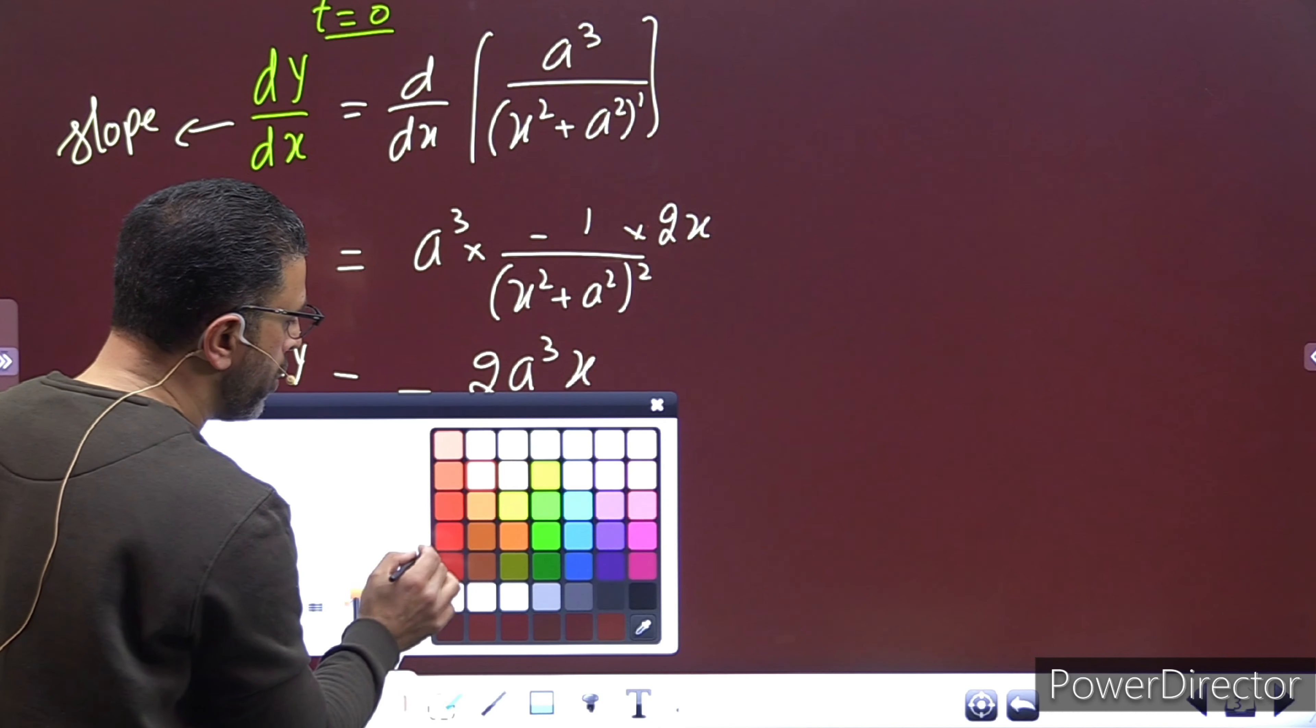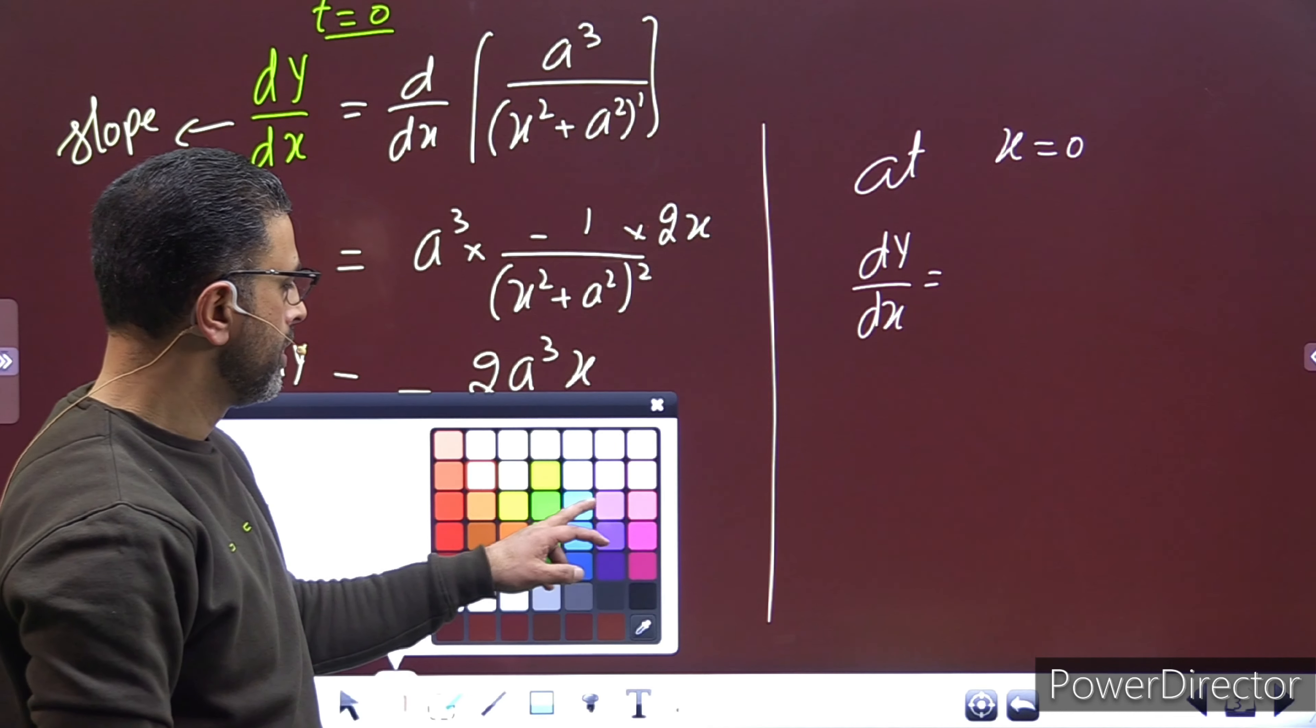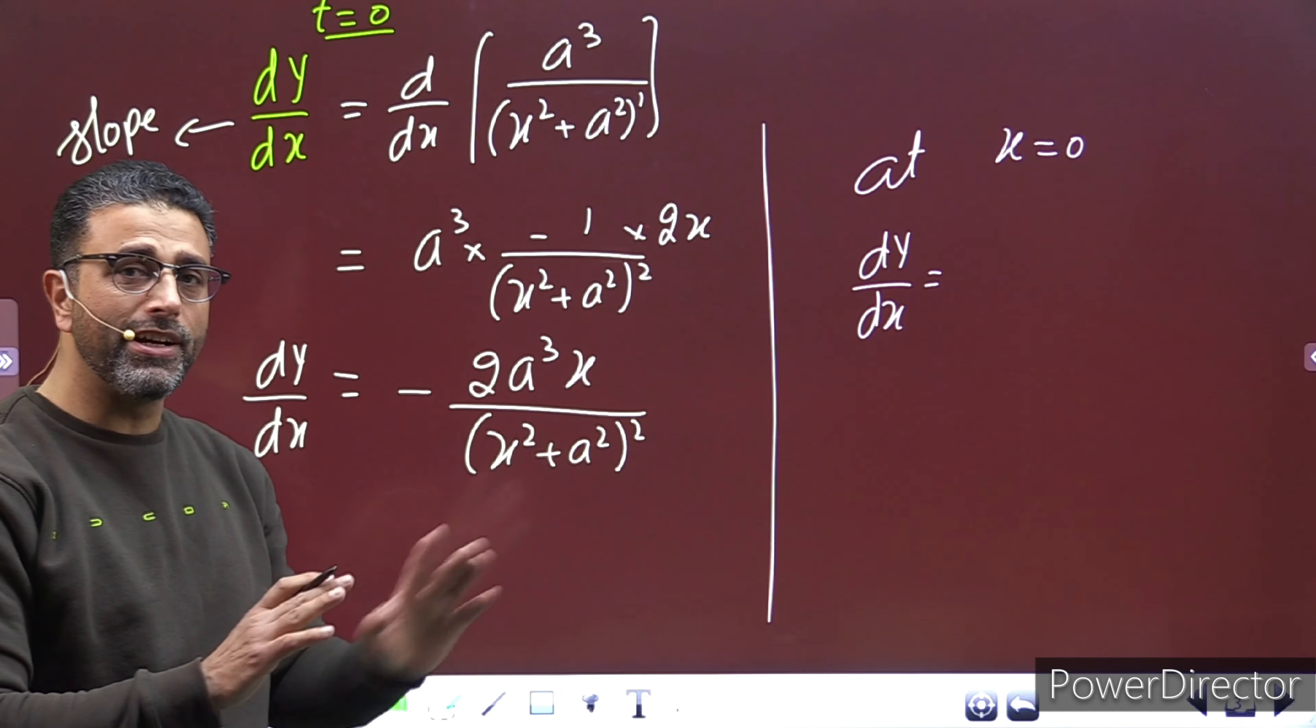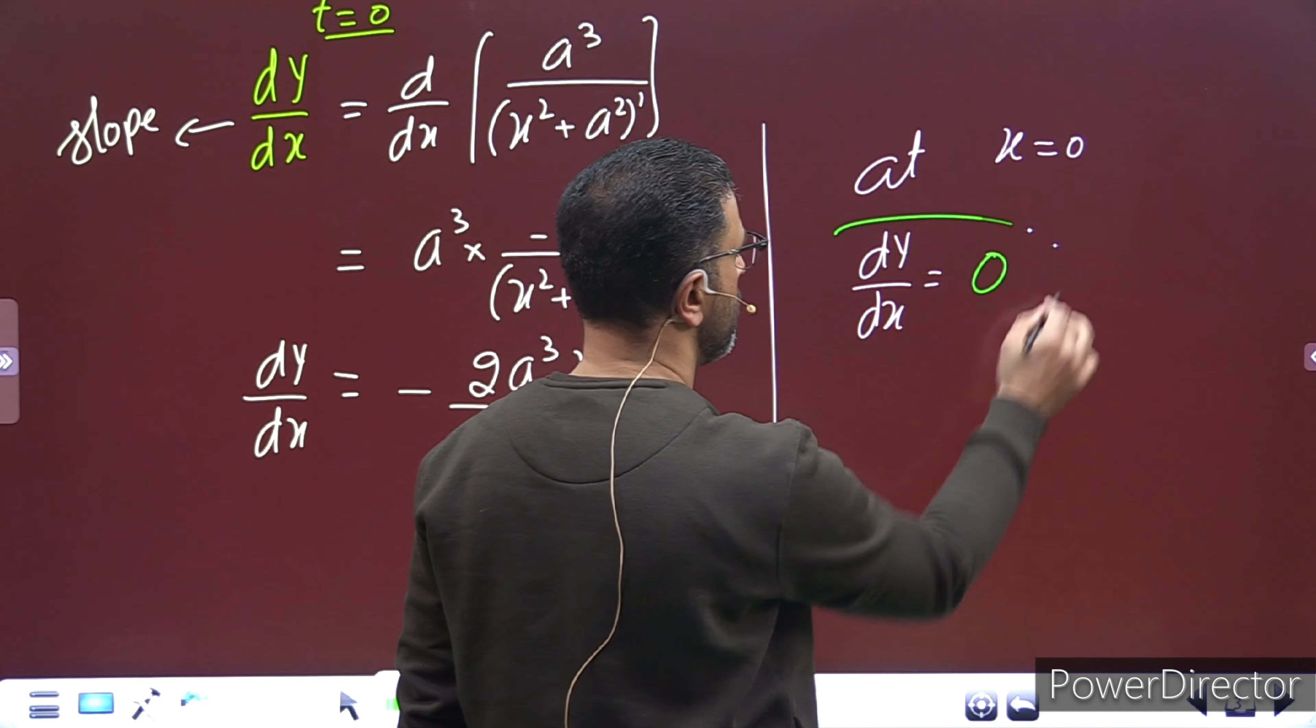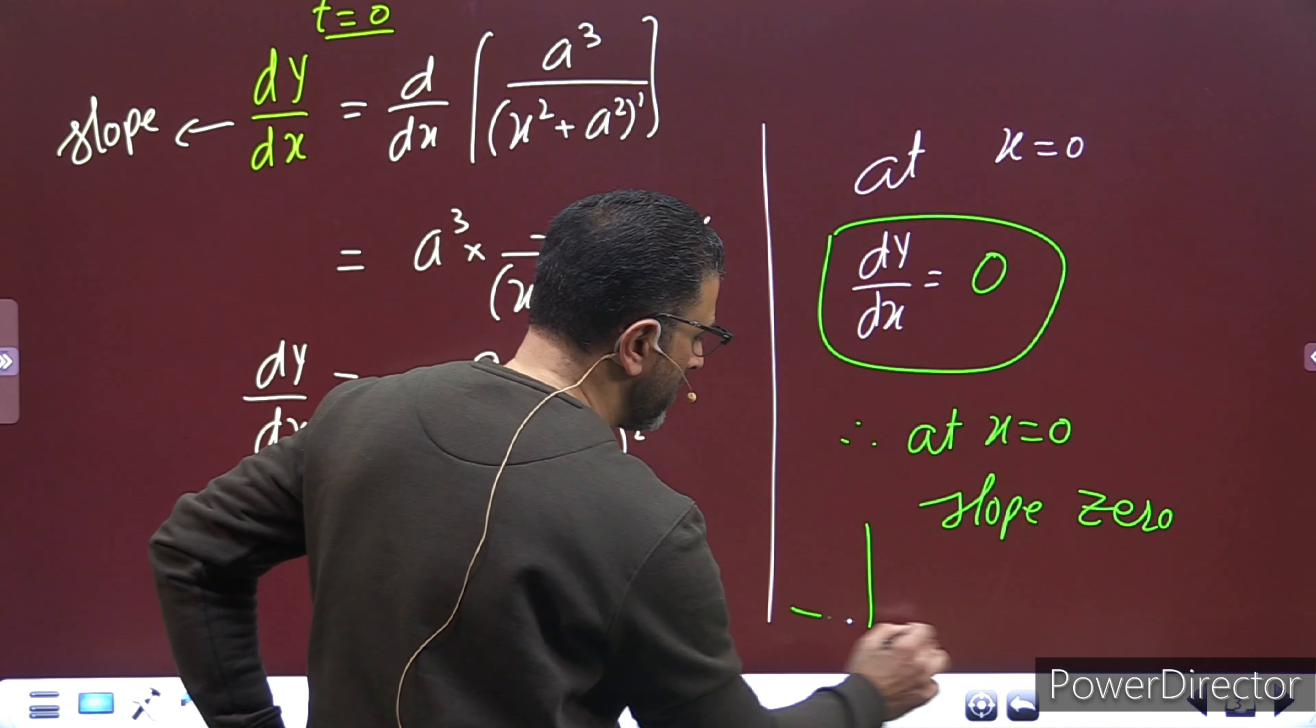Now, I am interested in a particular point: at x equal to zero, what is dy by dx equal to? At x equal to zero, I want to see what is the slope. Note, the denominator won't become zero, but here x is zero, so everything becomes zero. So dy by dx is equal to zero. Therefore, at x equal to zero, the slope is equal to zero. What does this mean? When we draw the graph, initially the slope will be - I'll just show you that.